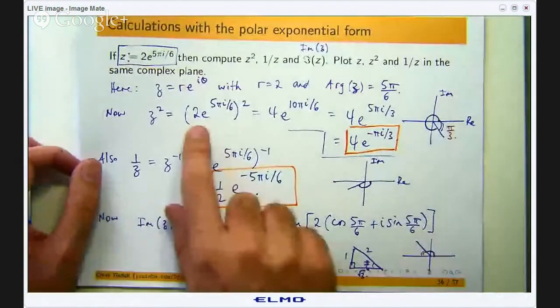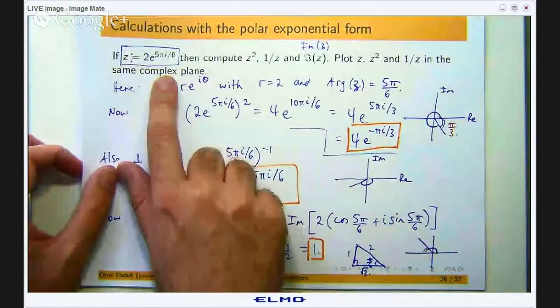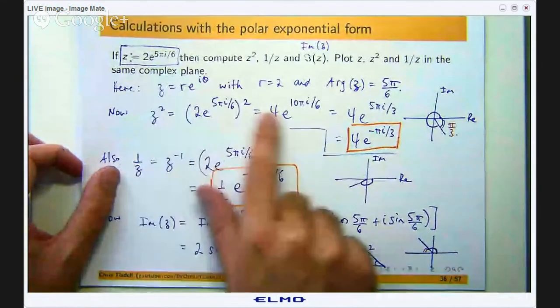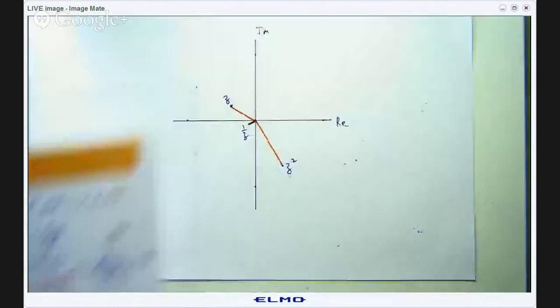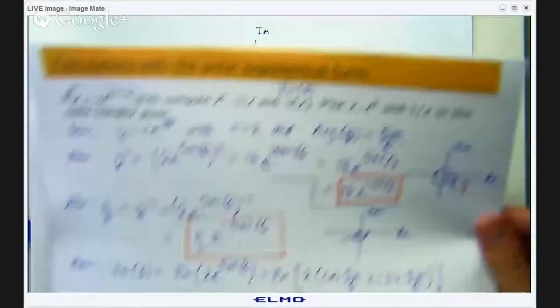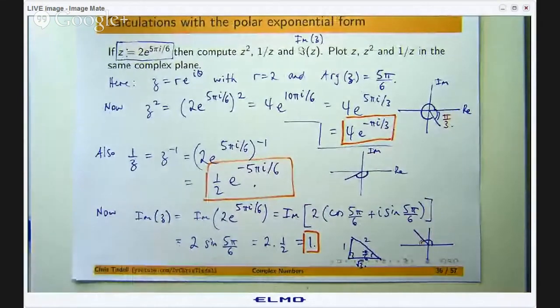You can hopefully see that because I'm using a polar exponential form here, the calculations are pretty easy. But with the geometry, it gives you a nice way of visualizing what should happen.